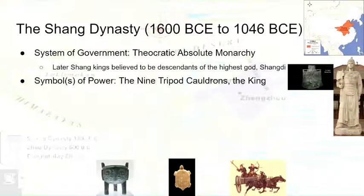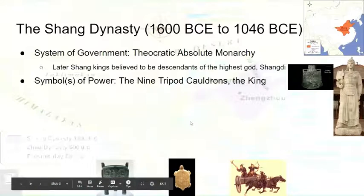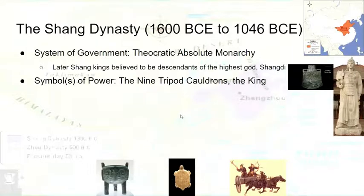The symbols of power of the Shang dynasty were the nine tripod cauldrons and the king. The nine tripod cauldrons — essentially a cauldron, sort of like the one on the lower left as you see here. Nine of them represent the nine areas that they controlled. They were supposedly created by Yu the Great of the legendary Xia dynasty. The Shang dynasty has these tripod cauldrons as the literal manifestation of their power, and the king is also a symbol of power in the Shang dynasty as well, for obvious reasons.